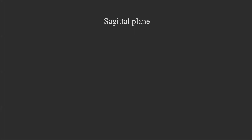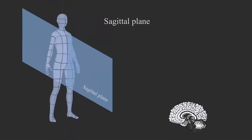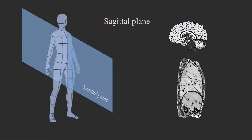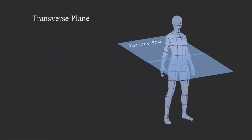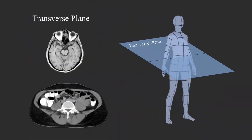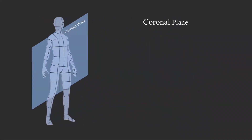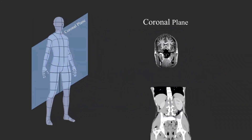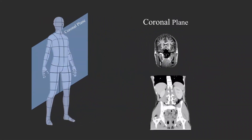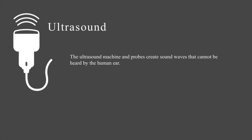There are different planes of examination with ultrasound, similar to CT scan. As shown here, this is a sagittal image, this is a transverse image, and this is a coronal image. We use ultrasound in all these different planes.